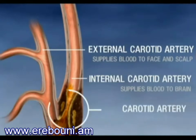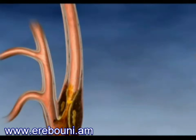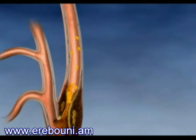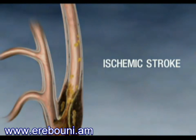Buildup of plaque in this artery is called carotid artery disease. In some cases, clots may form on the plaque as well. If a piece of this plaque or clot breaks off or embolizes, it can enter the blood vessels in the brain. The result is often ischemic stroke, which can cause brain damage leading to serious disability or death.